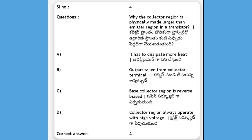Why is the collector region physically made larger than the emitter region in a transistor? The collector region always operates with high voltage and is reverse biased. The answer is A, it has to dissipate more heat.